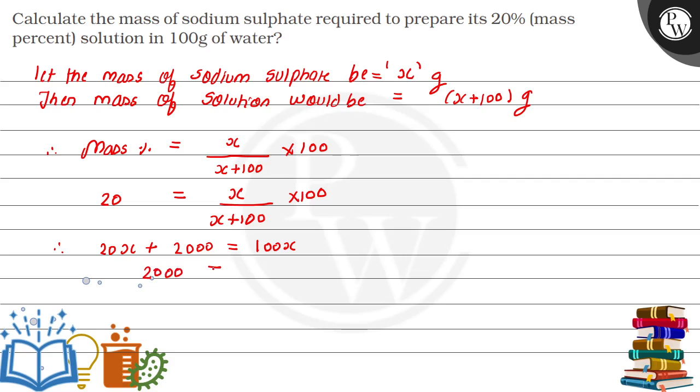This simplifies to 80X = 2000, so X = 2000/80.